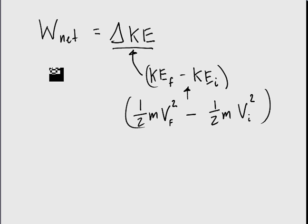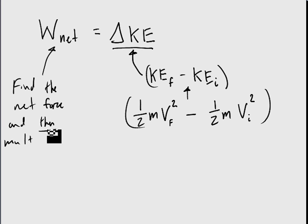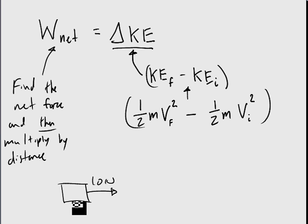When we go to the net work, this is saying find the net force and then multiply by the distance. The net force is the sum of all the forces. So if we have someone pushing this box with 10 newtons of force this way, and the force of friction is pushing the box with negative 3 newtons of force going the opposite way, and we do this over 2 meters.